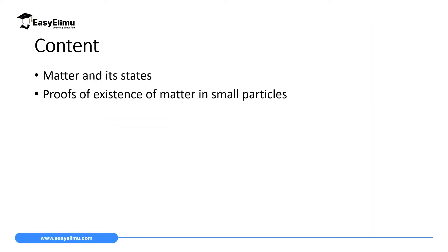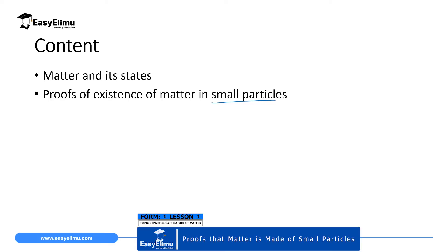By the end of this lesson, I expect you to be able to define matter and state its three main states, and then describe simple experiments which you can perform to prove that matter exists in small particles. You are going to realize that matter is made up of very small particles, and you have to describe at least four experiments to prove that indeed matter exists in small particles.